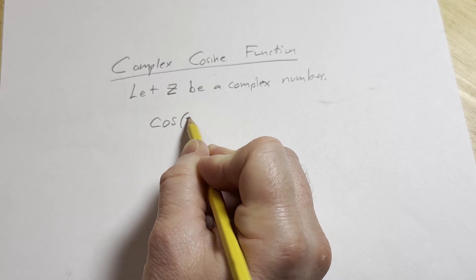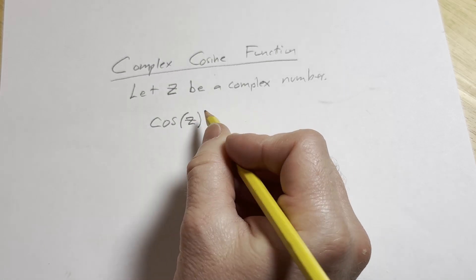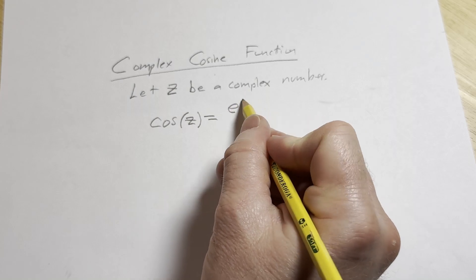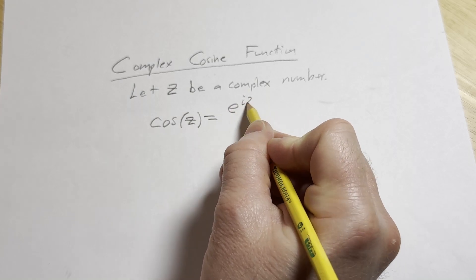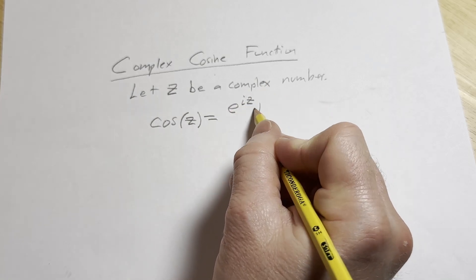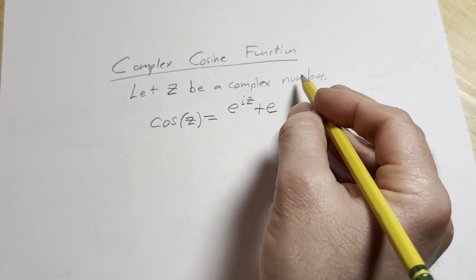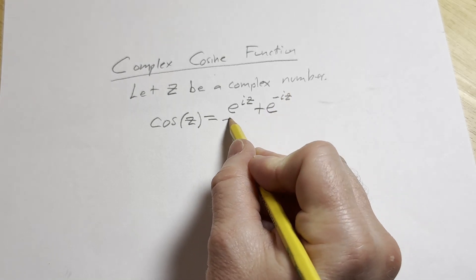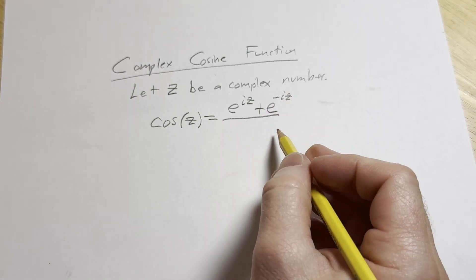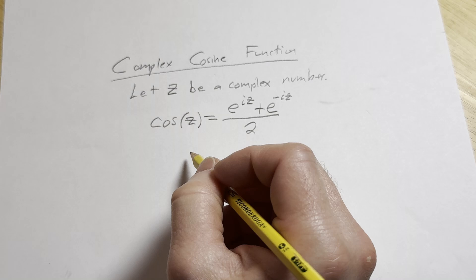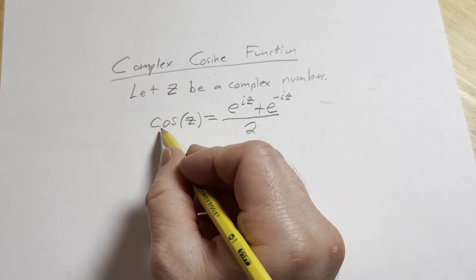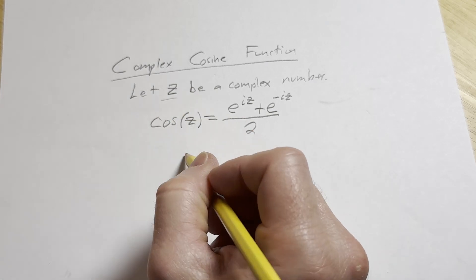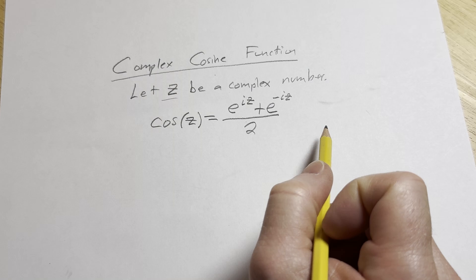The cosine of that complex number z is going to be e to the iz plus e to the negative iz, all divided by 2. That would be the cosine of a complex number, where z is a complex number.